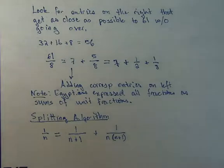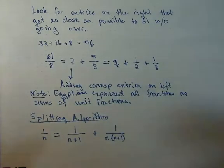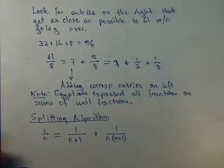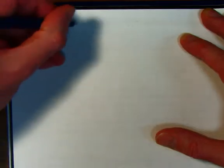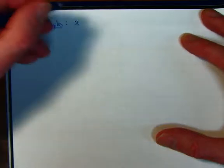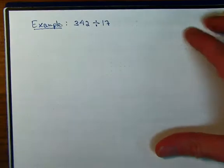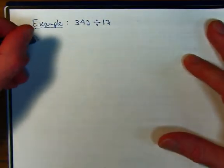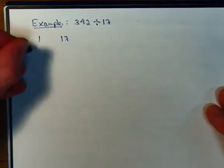Let me show you an example where that could be useful because it seems like we're taking a unit fraction and writing it as a sum of two other unit fractions. Let me give you an example of where we might use that. We're going to take 342 and we're going to divide that by 17. We'll follow the same exact procedure that we did before. Start with a 1 here and in the right-hand column, we've got to have our divisor.